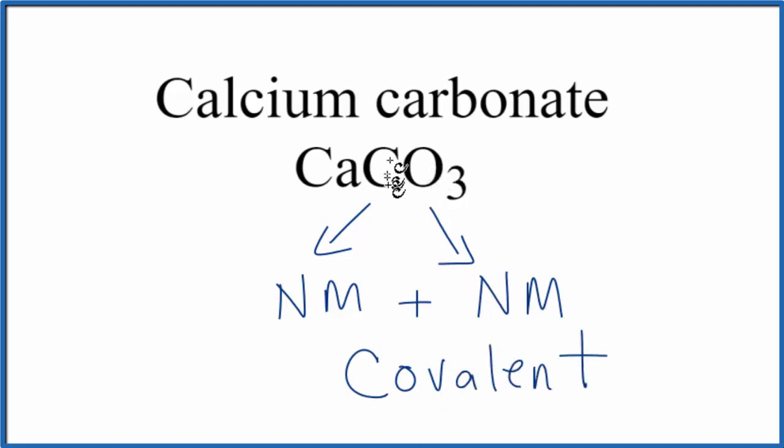The bond between the carbon and the oxygens in the carbonate ion are covalent bonds, but overall we have the positive calcium and the negative carbonate ions. They're attracted because they're opposite to form the ionic bond.